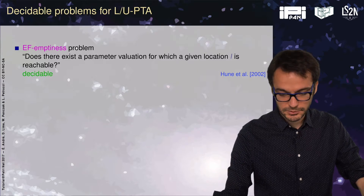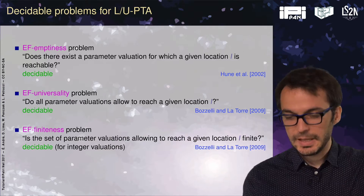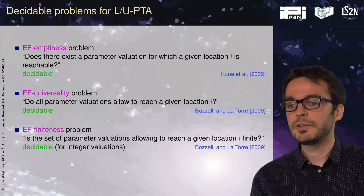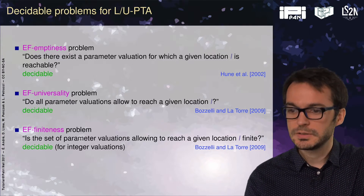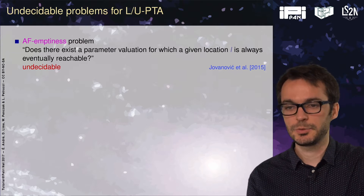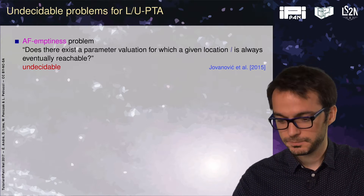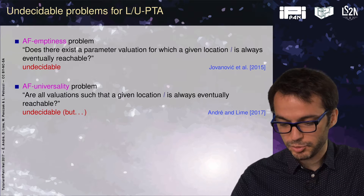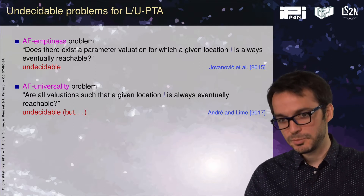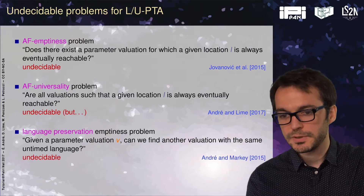The good news is that the EF emptiness (reachability emptiness) problem is decidable for LUPTA — shown 15 years ago. The universality problem is also decidable. The finiteness problem — is the set of integer parameter valuations allowing to reach a given location finite or not — is decidable as well. However, more recent results have shown that LUPTA are not as interesting as initially thought: the AF emptiness (unavoidability emptiness) problem is undecidable, and the AF universality problem is also undecidable, although for some subclasses with bounded parameter domains and closed bounds, decidability is recovered. The language preservation problem is also undecidable for LUPTA.